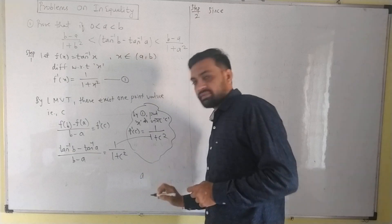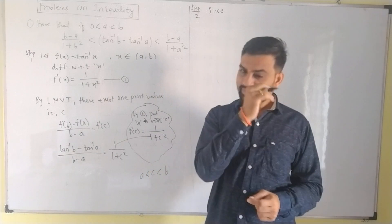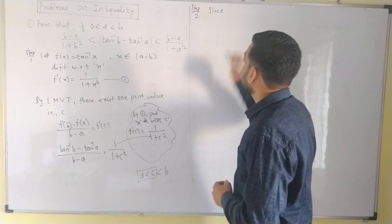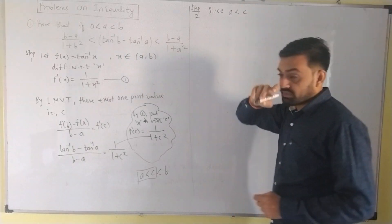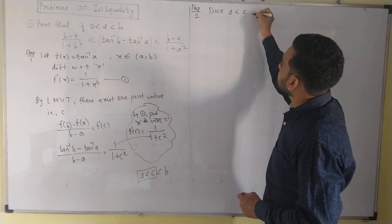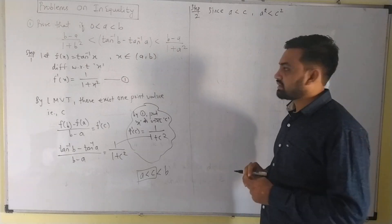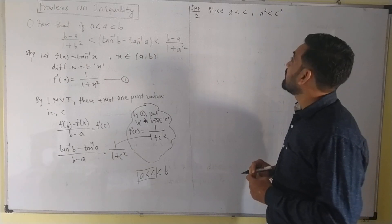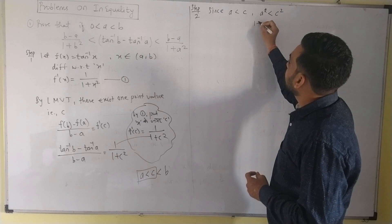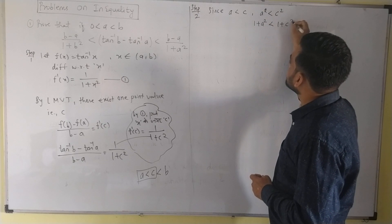Now let's think about A. Since A is less than C. Now I am going to square it — A less than C. So 1 plus A square is less than 1 plus C square.